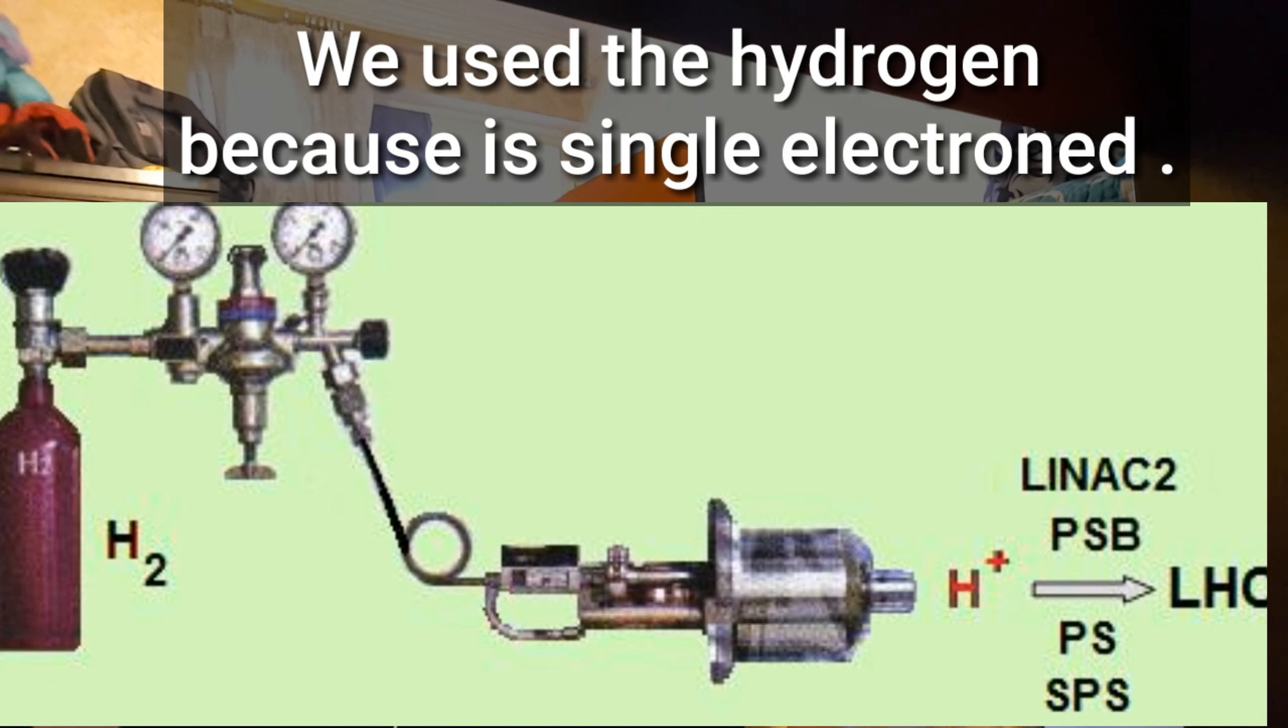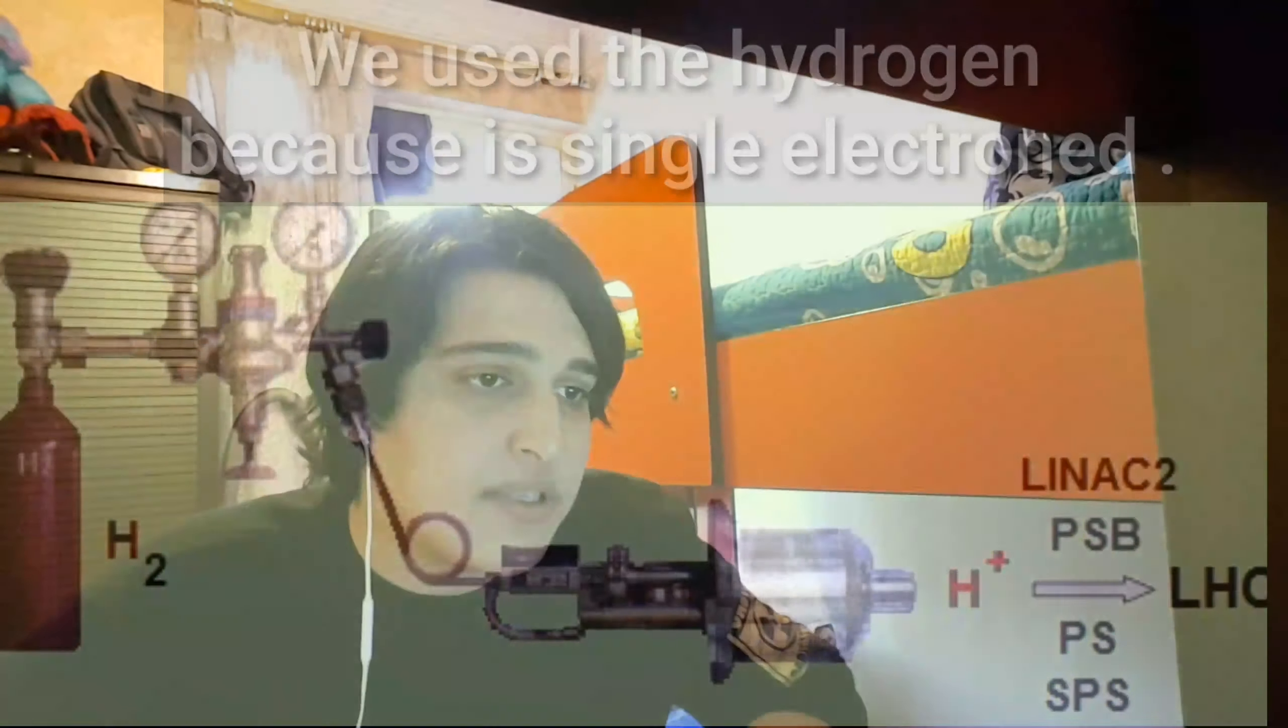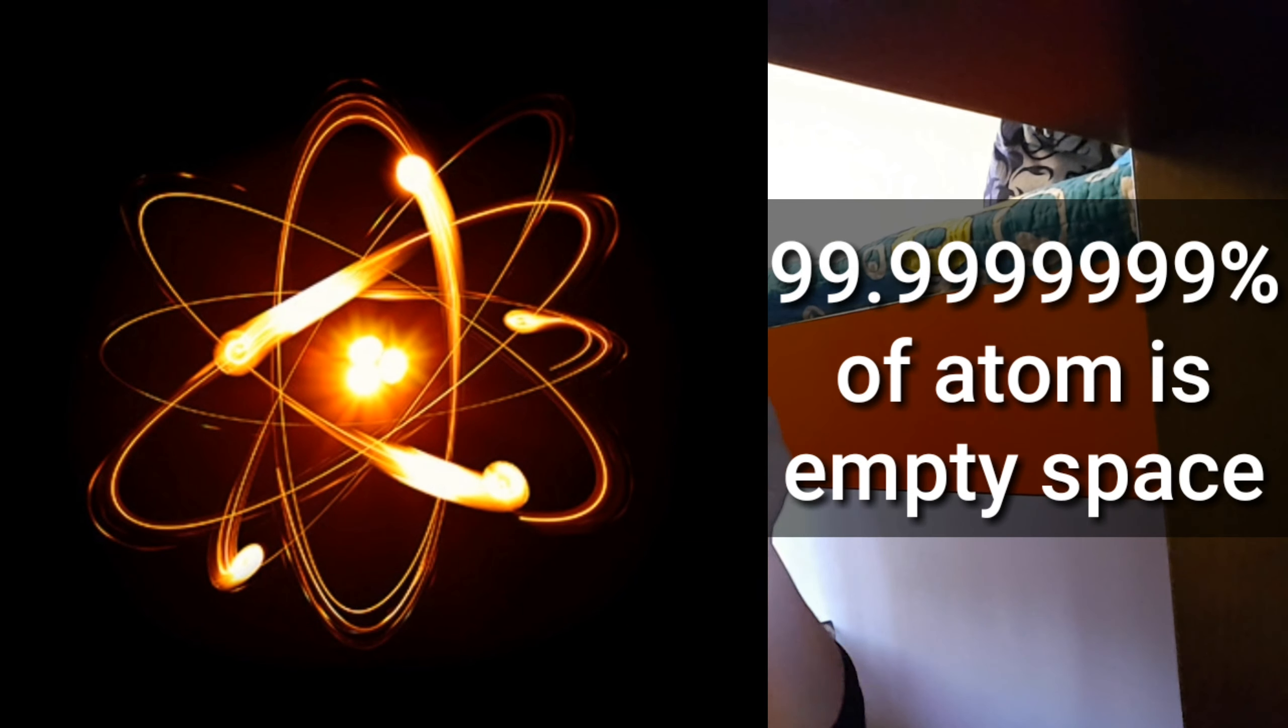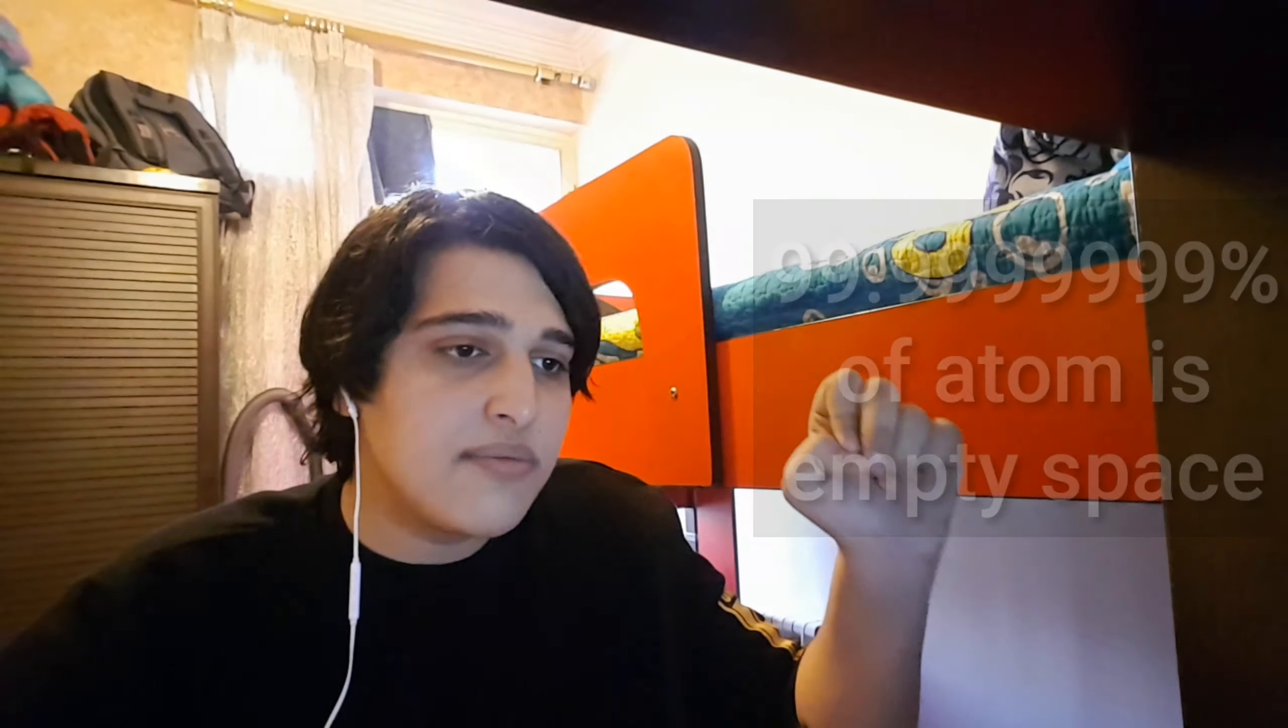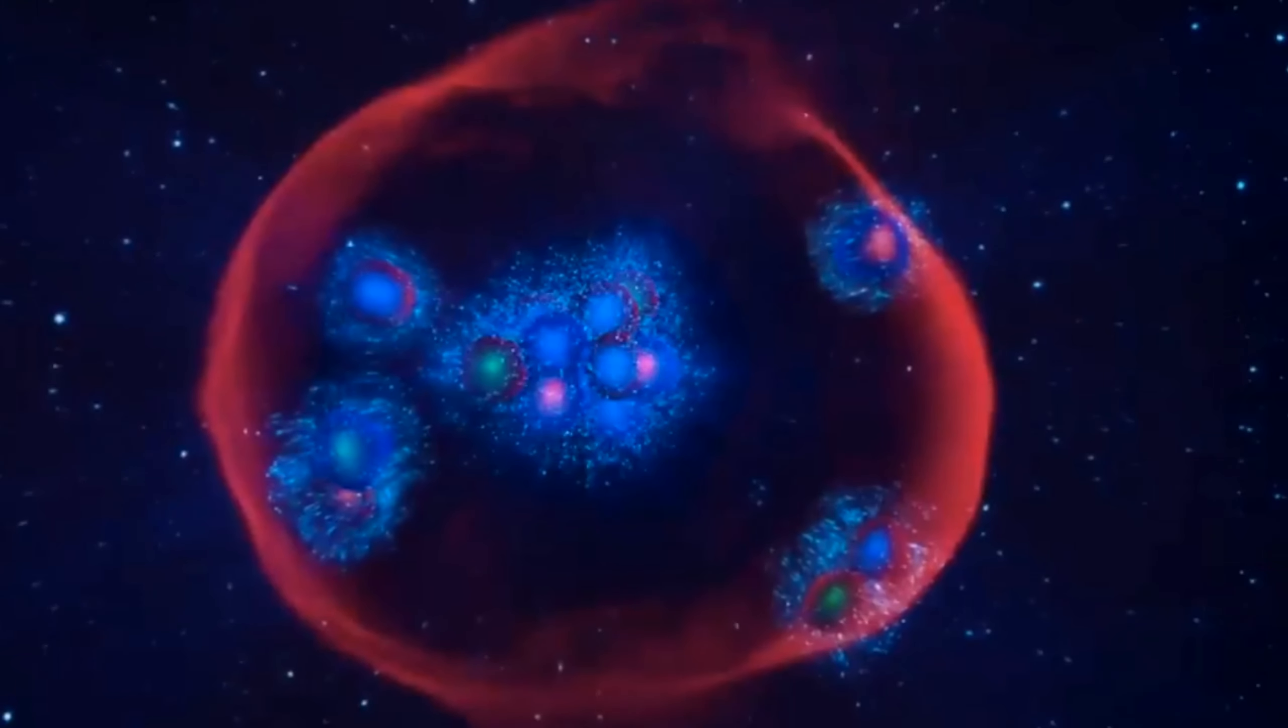Because we use in this process hydrogen gas, so we collide two whole atoms for the process of collapsing the protons. But the problem is, 99.999% of the atom is empty space. So it was difficult to make the protons collide with each other.